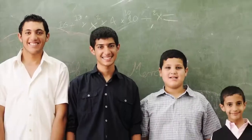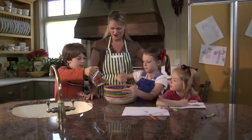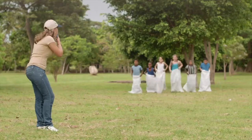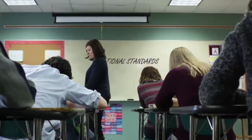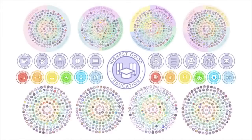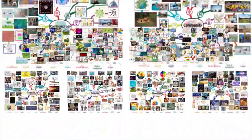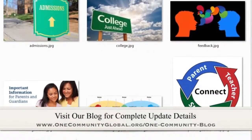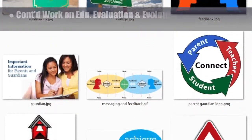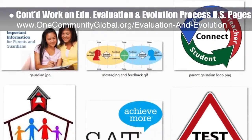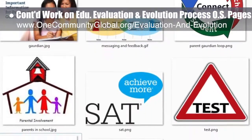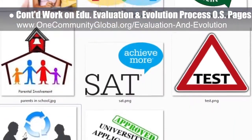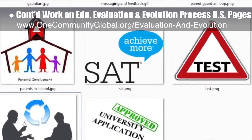One Community's approach to highest good education is designed for all age groups, adaptable to any schooling environment, inspiring and fun for all participants, and includes national standards, all subjects, lesson plans, teaching strategies, learning strategies and tools, classroom design, and more. This week the core team continued researching images to add to the education, evaluation, and evolution process open source pages and tutorials. We found 11 more images for the pages.